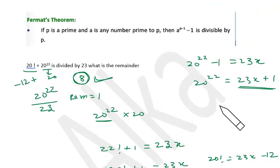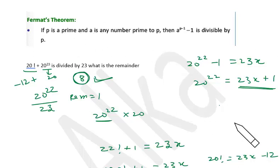Many students have sent doubts based on Fermat's theorem — it's pretty easy. Just note down the theorem, and whenever you see a prime number and another number co-prime to it, you can think of applying Fermat's theorem.